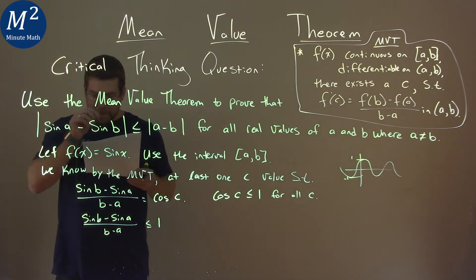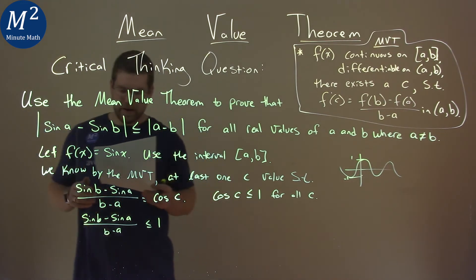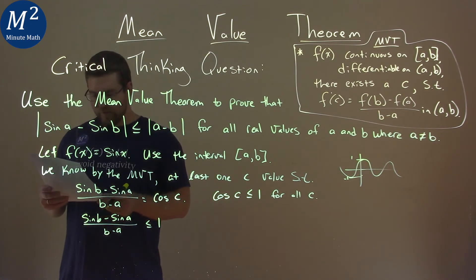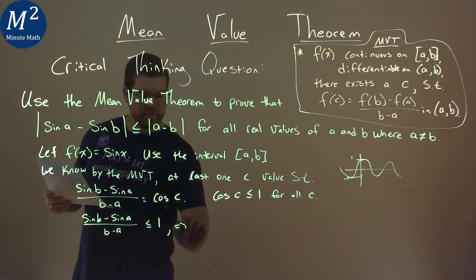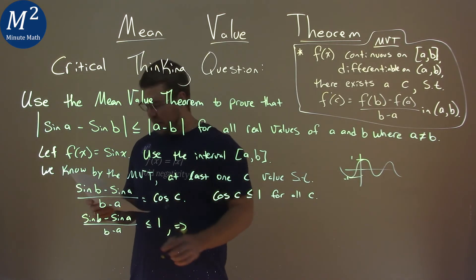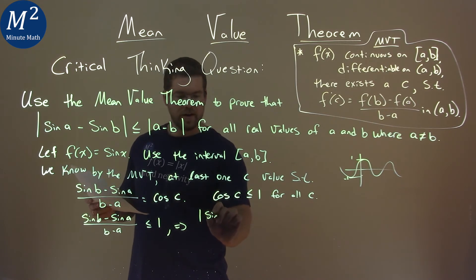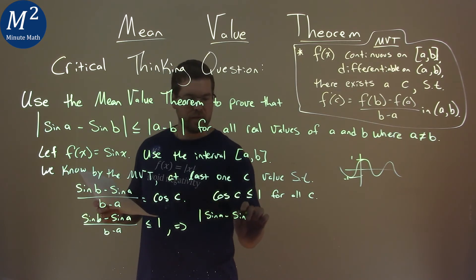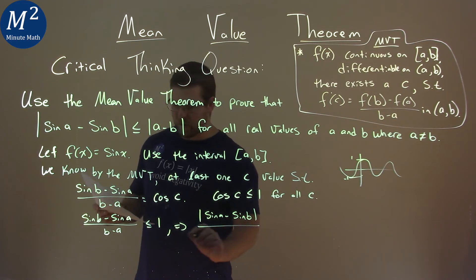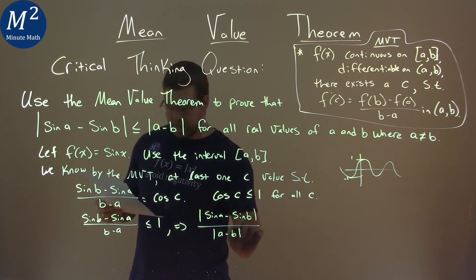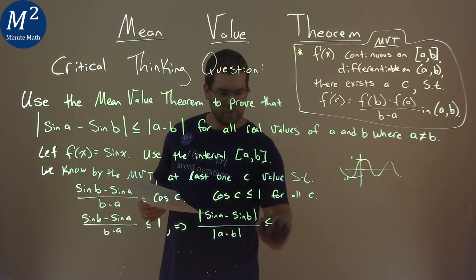From there, if we take the absolute value of everything, we can flip it around: |sin A - sin B| over |A - B| is less than or equal to 1.